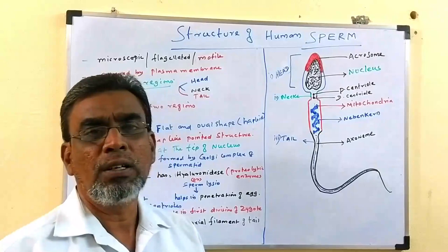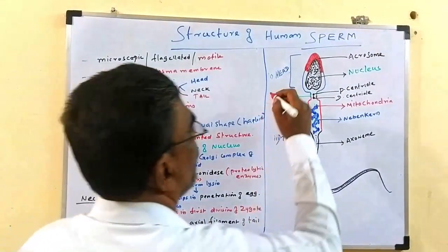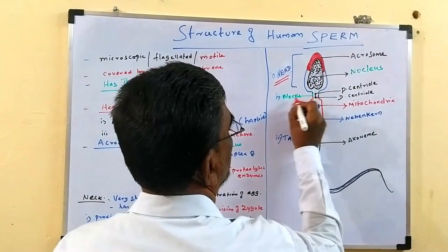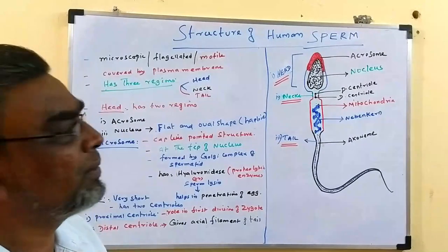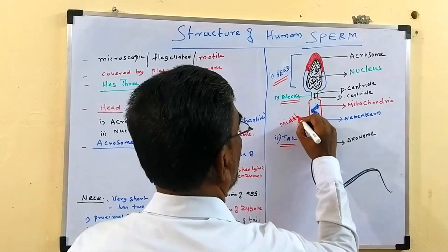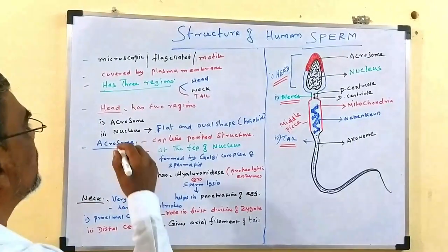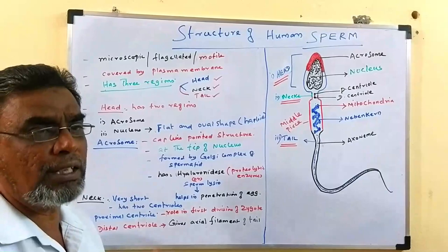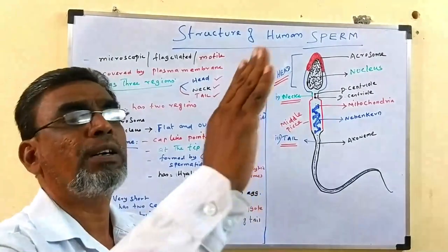Shortly, the structure of sperm has three regions. What are the regions? One is the head region, there is a small neck called the neck region, the third one is the tail region, and one more is the middle piece. So totally it has three regions: head region, neck region, and tail region. We will discuss the importance of the head region, the significant role of the neck region, and the function of the tail region.